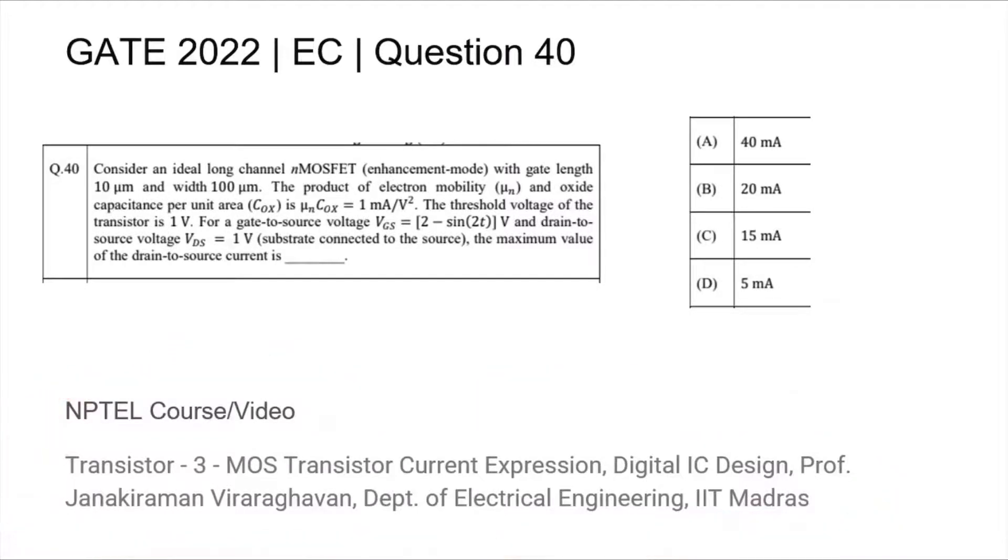Underneath the question you will find the title of the NPTEL course or video relevant to this topic. We are given that VGS is equal to 2 minus sine(2t) volts. We are asked to find out what the maximum value of the drain to source current is given that the VDS voltage is held constant at 1 volt, and that we have L equal to 10 micron, transistor W is 100 micron, and the threshold voltage is 1 volt.